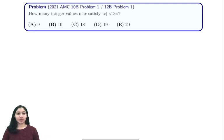Hi everyone, in this video we're going to be going through 2020 AMC 10B or 12B problem one. It states: how many integer values of x satisfy the absolute value of x is less than 3π?